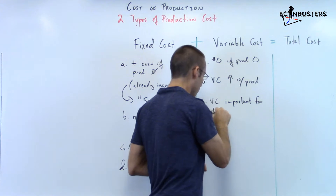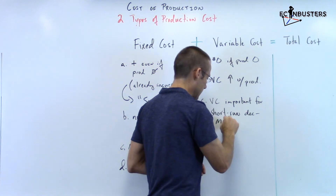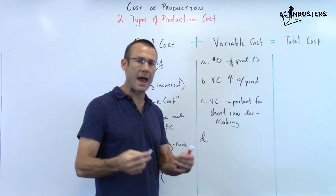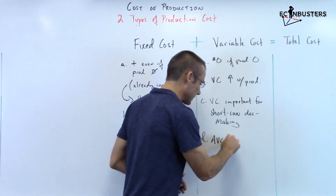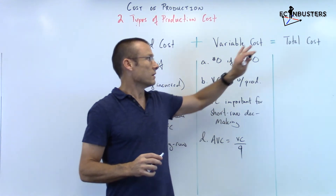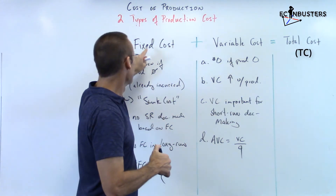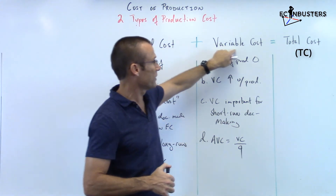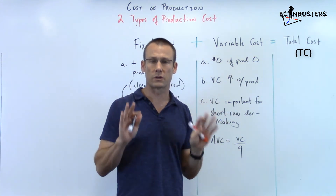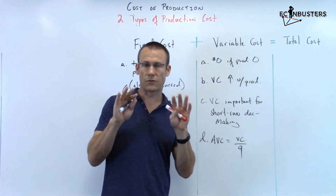Variable costs are important for short-run decision making. Average variable cost equals variable cost divided by quantity. Now, total cost: fixed cost plus variable cost equals total cost. There are only two types of production costs we're considering. These are very conceptual buckets, which is what first-year microeconomics is all about — understanding the concept.